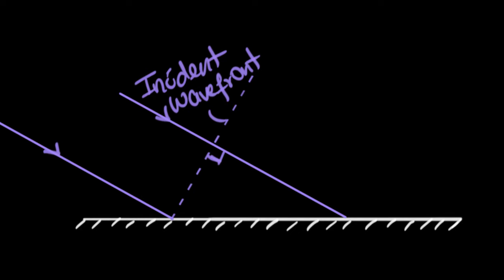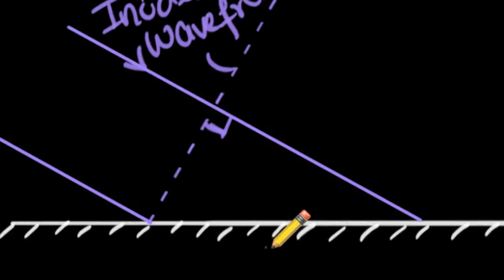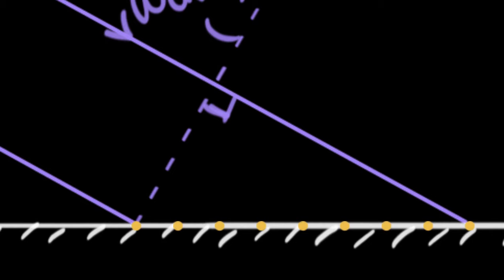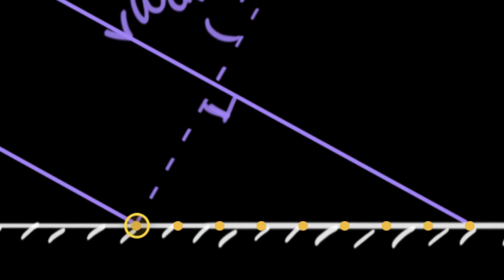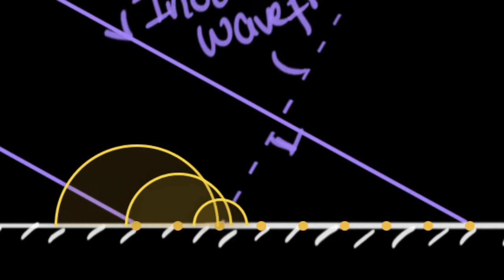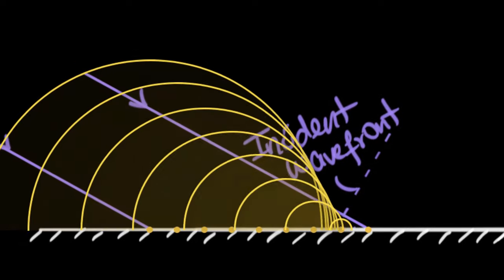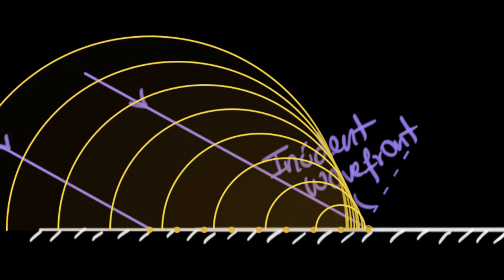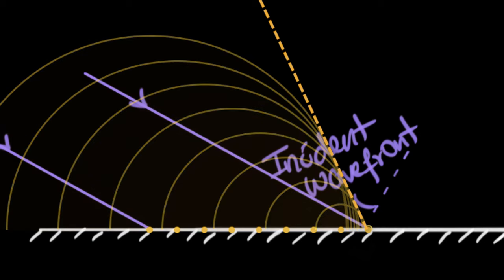How do we draw our reflected wavefront? To do that, we need to draw reflected secondary waves. From Huygens' principle we can then draw a common tangent. Since these reflected secondary waves come from the mirror, every single point on the mirror becomes a Huygens source. When the incident wavefront hits a Huygens source, it gets activated and starts giving out secondary waves. As the wavefront moves forward, more and more sources get activated and give out secondary waves. A common tangent to all these circles represents our reflected wavefront.